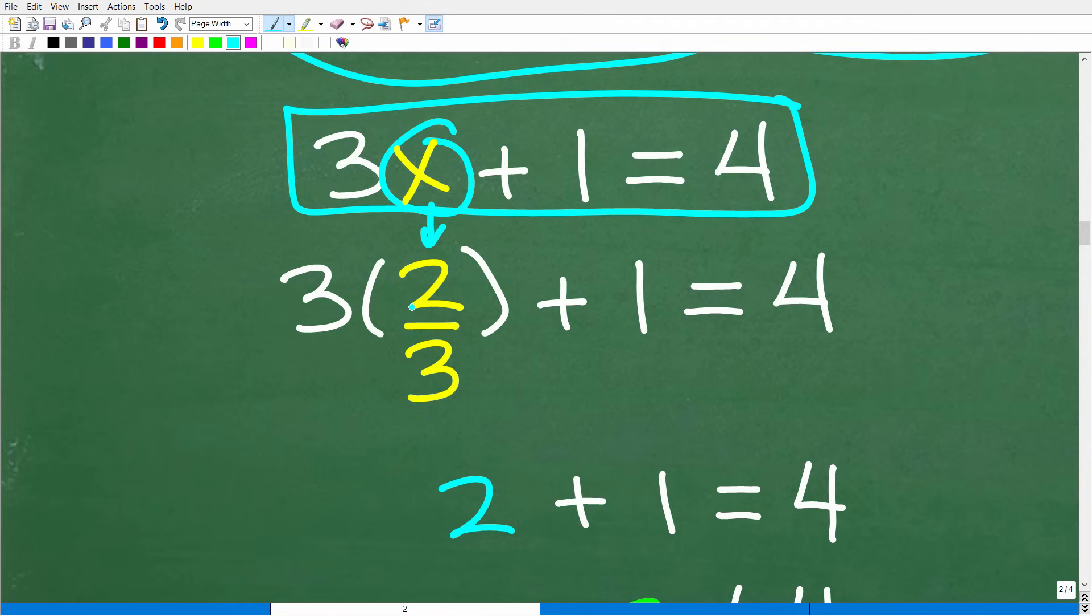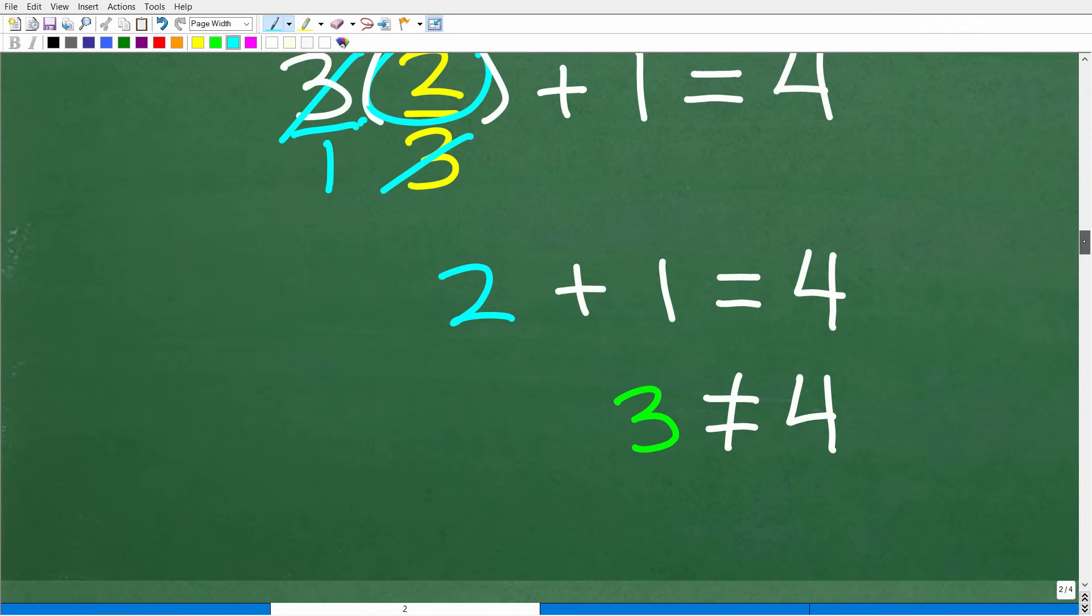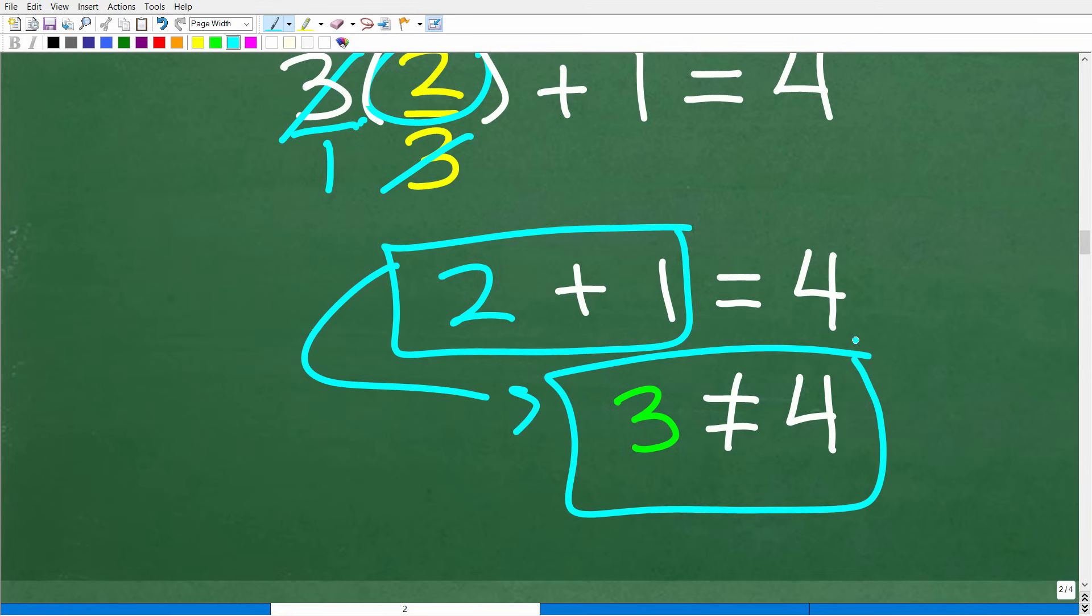So three times two thirds. We're multiplying fractions, right? So this is three over one. So three times two thirds. We can cross cancel the threes. So that is just two. So we have here two plus one. Is this equal to four? Well, two plus one, the last time I checked, is three. Is three the same as four? No, this is a false statement.